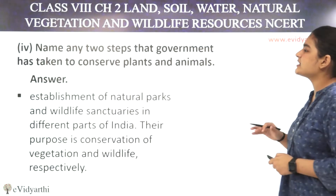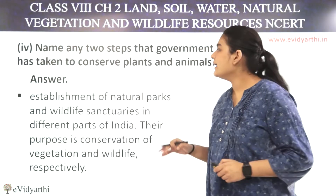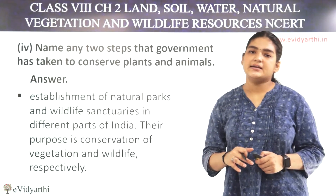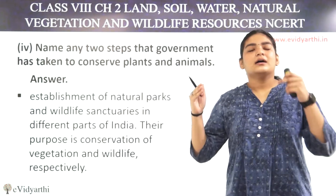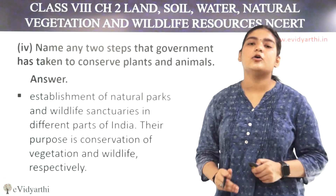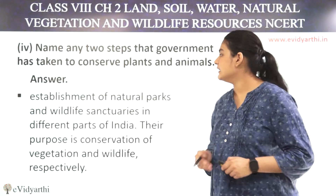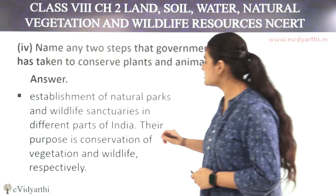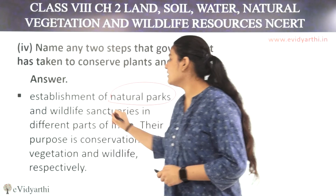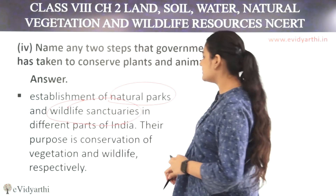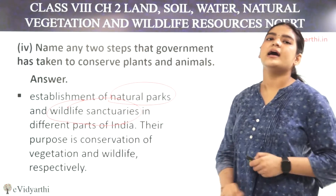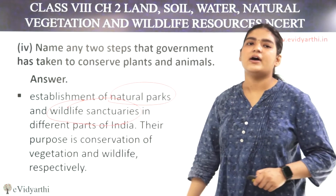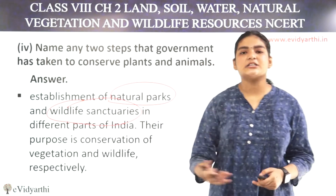The fourth question: Name any two steps that the government has taken to conserve plants and animals. The government needs to protect and conserve plants and animals. The answer is: first, the establishment of national parks and wildlife sanctuaries, and second, conservation of vegetation and wildlife respectively.